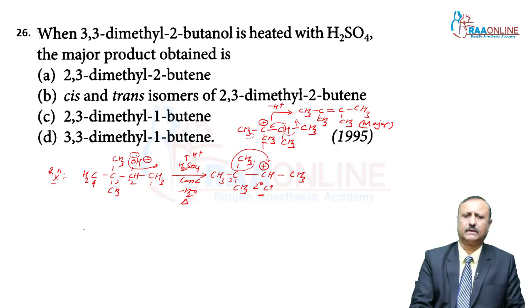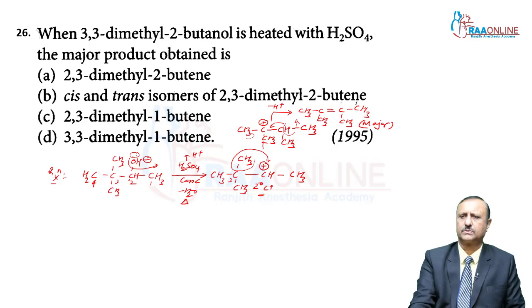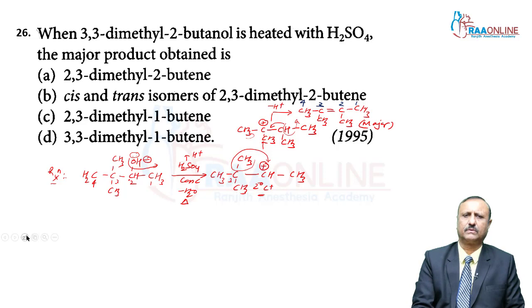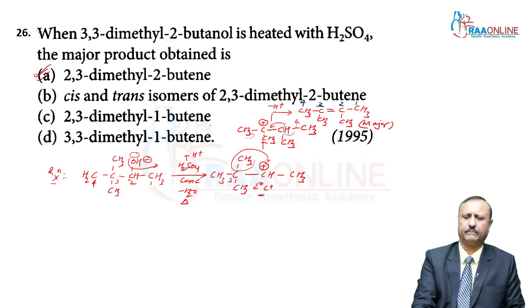The IUPAC naming of this product: the chain has 4 carbons (1,2,3,4), two methyl groups are present — one on the second and one on the third carbon — therefore it is called 2,3-dimethylbutene. The answer is option A: 2,3-dimethylbut-2-ene.